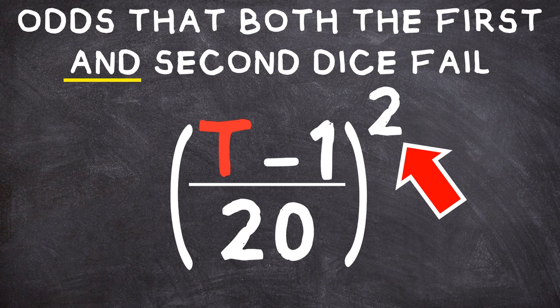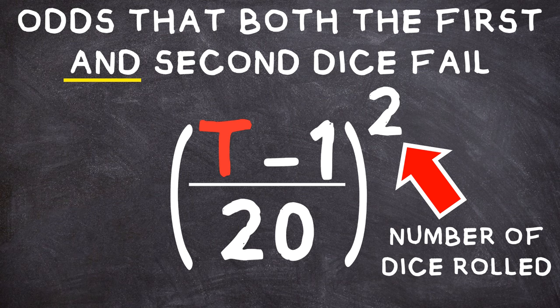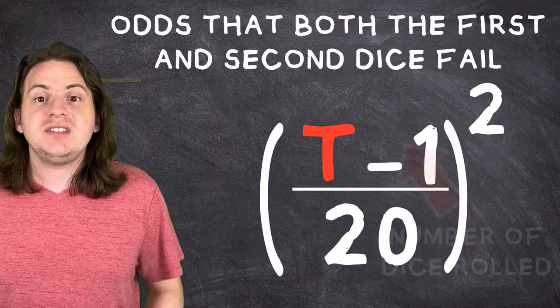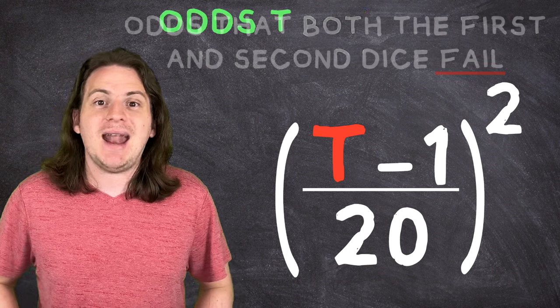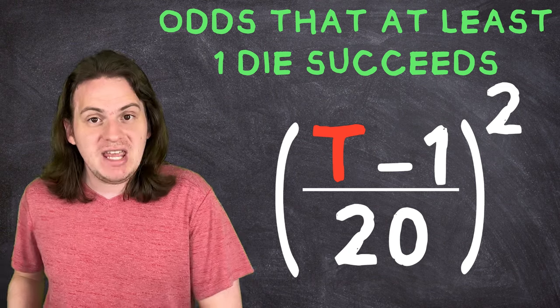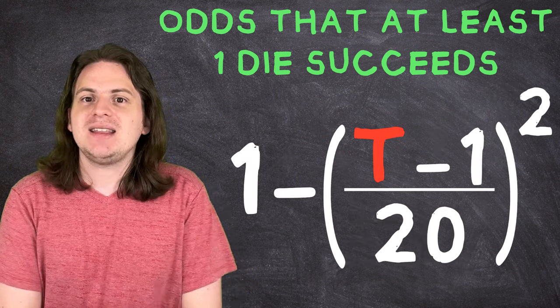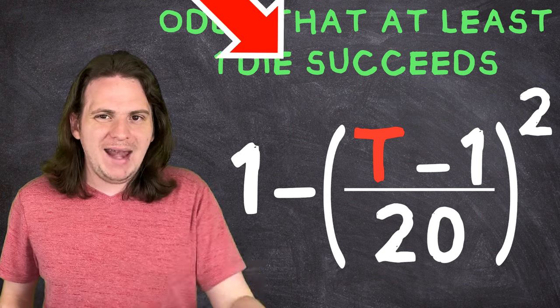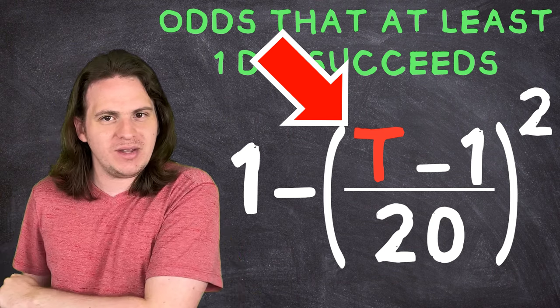So the odds that both dice fail is target minus one over 20 times target minus one over 20. Since these two are the same exact thing, we can simplify this to target minus one over 20 squared. This two here basically just signifies that you're rolling two dice. If you were rolling with three dice and picking the highest, then that'd be a three and so on. This gives us the odds of failing the roll. So to find the odds that at least one of the dice succeeds, we can simply do one minus that. And just like that, now we've got an equation where you can plug in any target number and find the odds of success when rolling with advantage. Great.